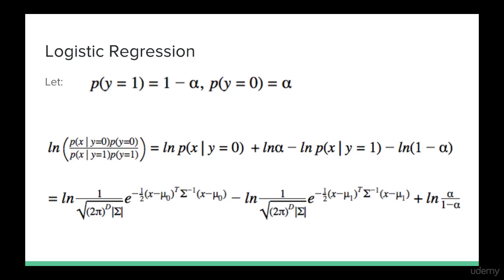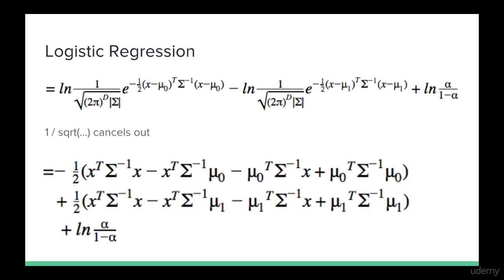We can plug in the Gaussian PDF, and we immediately see the benefit of taking the log, since everything inside the exponential will drop down. We can also see that everything inside the square root will cancel out, because it's just being subtracted from itself.